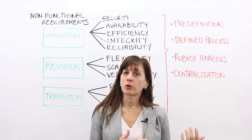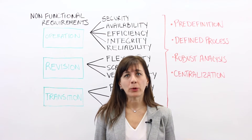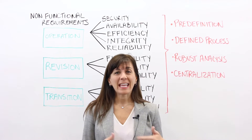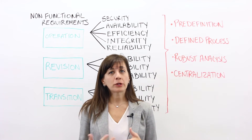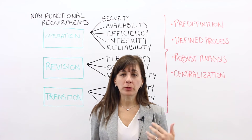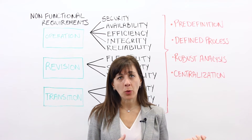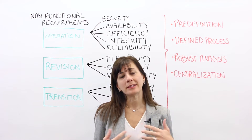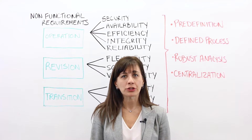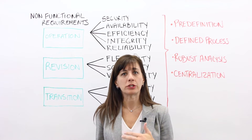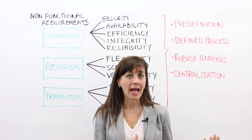A functional requirement is what the system or end product is supposed to do — it answers the question, what? For example, if you're building the software for a bank machine, a functional requirement would be that the system needs to allow users to withdraw cash. What is it supposed to do? It allows users to withdraw cash.